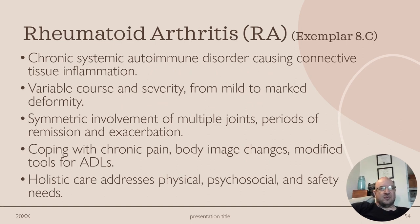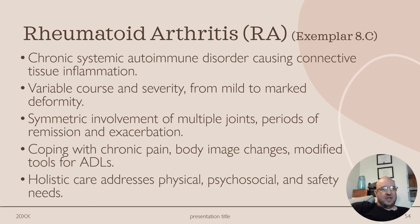Moving on to rheumatoid arthritis. Rheumatoid arthritis is a chronic systemic autoimmune disorder causing connective tissue inflammation. It has a variable course and severity ranging from mild to markedly deformed. It involves symmetric involvement of multiple joints with periods of remission and exacerbation. Coping with chronic pain and body image changes requires modified tools for ADLs, and holistic care addresses physical, psychosocial, and safety needs.